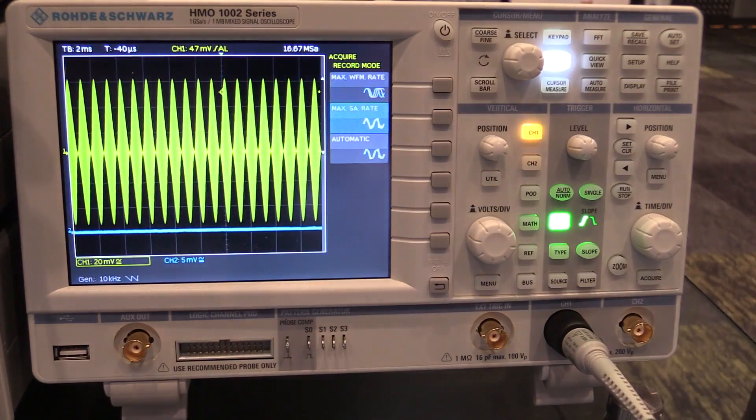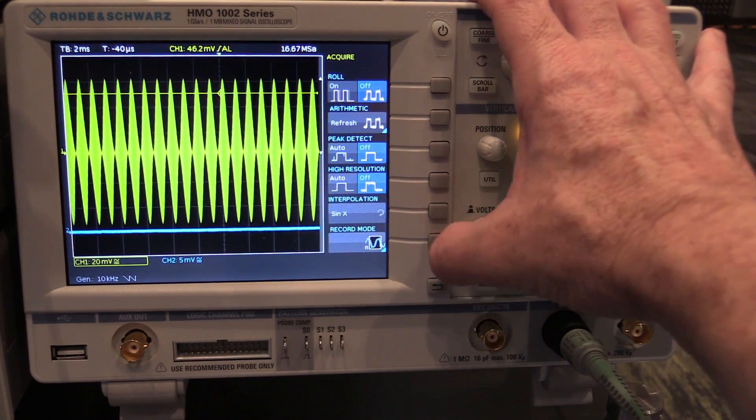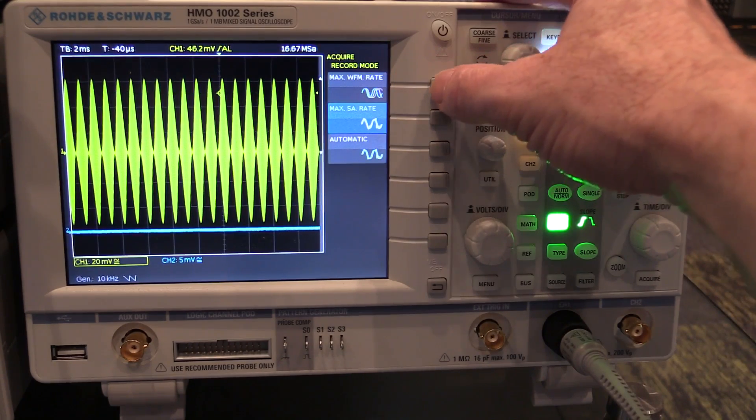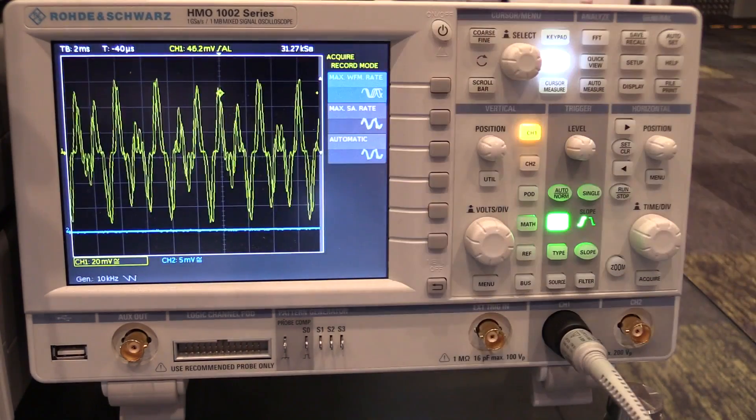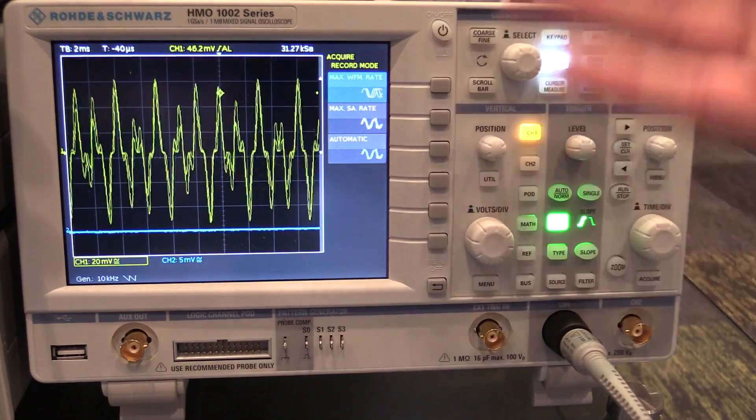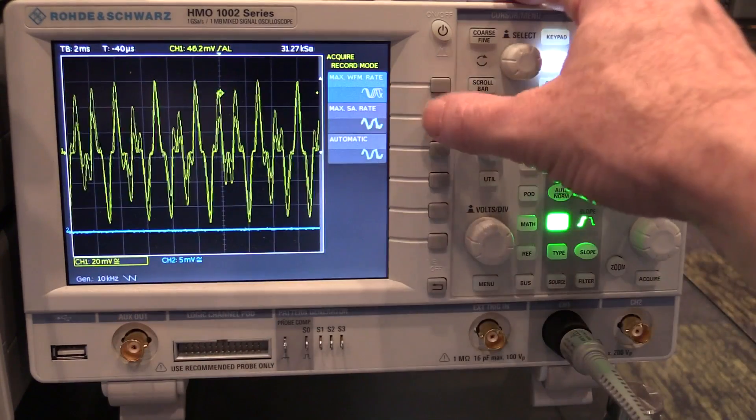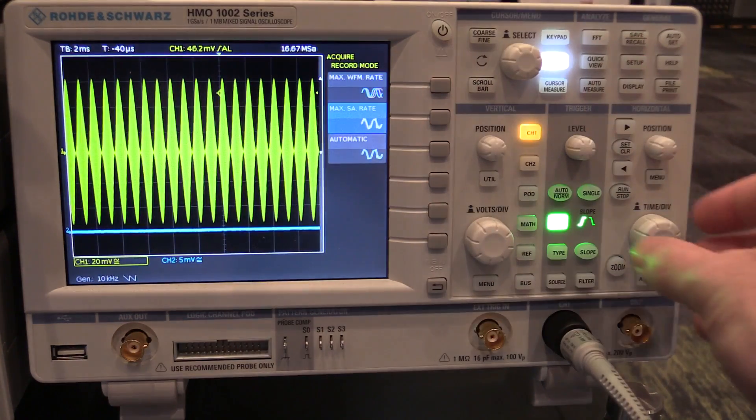Now I'll tell you what. This is interesting. You go into the acquire mode. You go into record mode down here. And you can actually select max update rate like this. And bingo. Right. It's trying to get the maximum waveforms per second. And I haven't tested if we can get that out of the aux out yet.